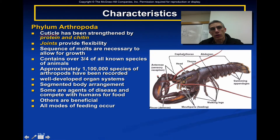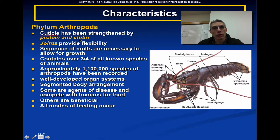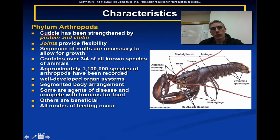When talking about arthropods, the cuticle is made primarily of protein and a special polysaccharide material called chitin. Those two things together make this outer covering very strong. Because arthropods are carrying around a relatively heavy exoskeleton, they need appendages that can support the weight of that body structure.